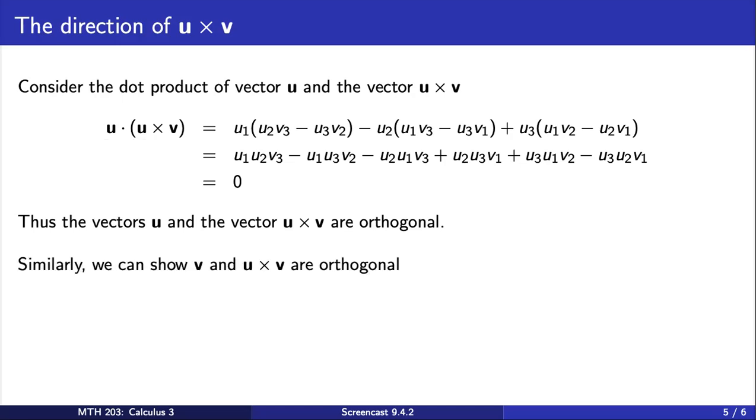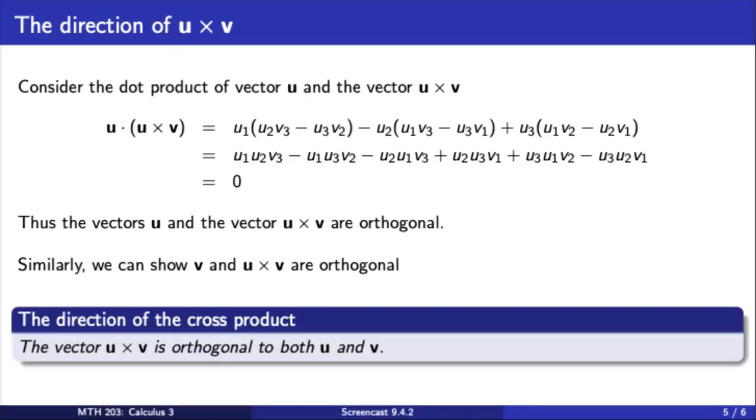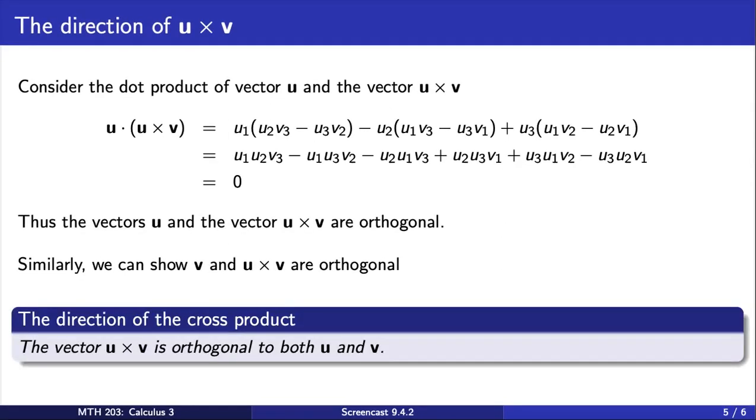And similarly, we can show that the vector v and the vector u cross v are orthogonal. And this tells us that the cross product of two vectors u and v gives us a new vector that is orthogonal to both u and v.